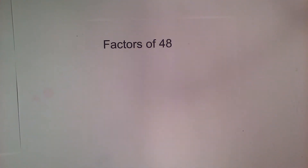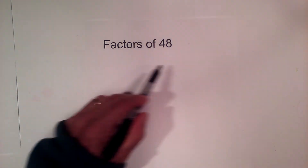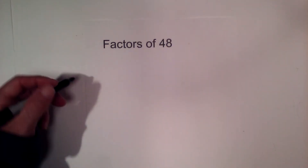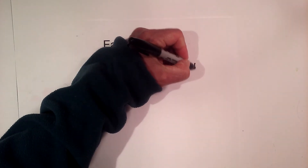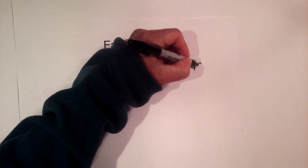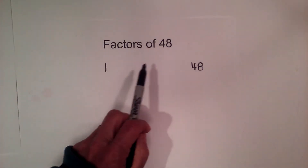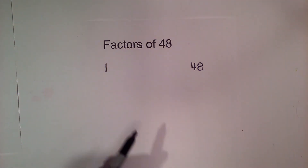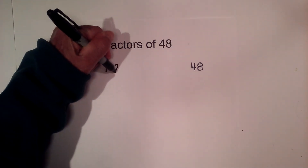In this video let's find all the factors of 48. I like to use a technique called the rainbow method. I'm going to start with 1 times 48, and then find all the numbers in between that multiply together to equal 48. So let's start with 2 — will 2 go into 48? Yes, it ends in an even number.